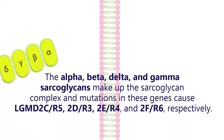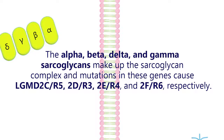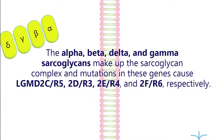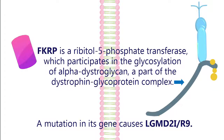The alpha, beta, delta, and gamma sarcoglycans make up the sarcoglycan complex, and mutations in these genes cause LGMD2C-R5, 2D-R3, 2E-R4, and 2F-R6, respectively. FKRP is a ribidol-5-phosphate transferase, which participates in the glycosylation of alpha-distroglycan, a part of the dystrophin-glycoprotein complex. This glycosylation ensures the proper anchoring of the muscle and basement membrane, and a mutation in its gene causes LGMD2I-R9.